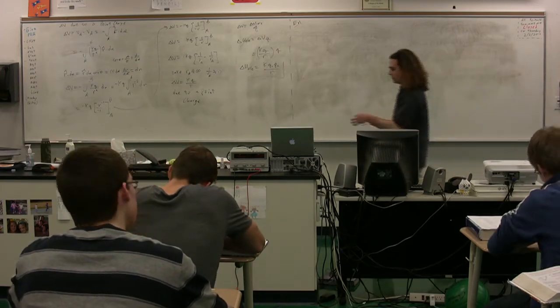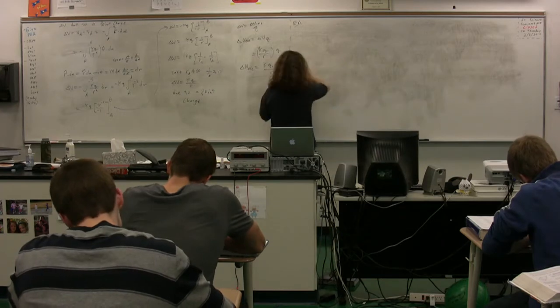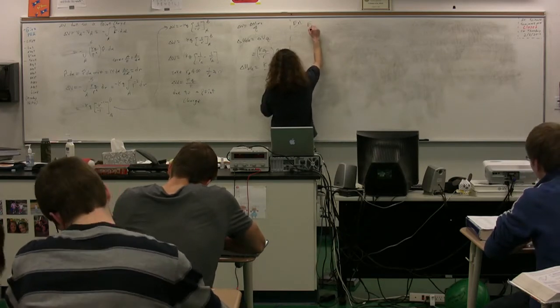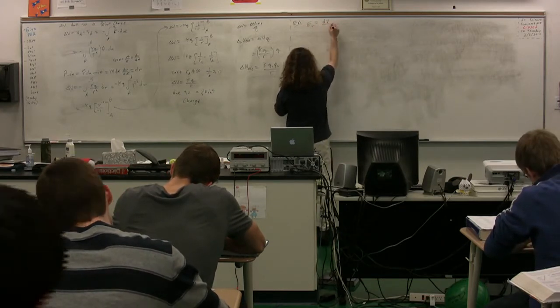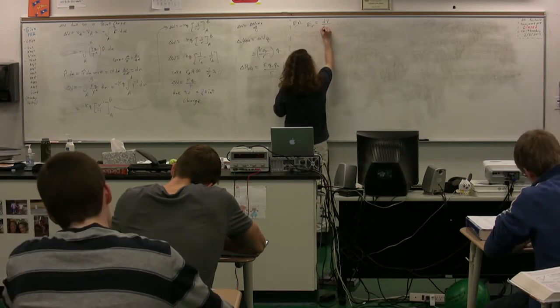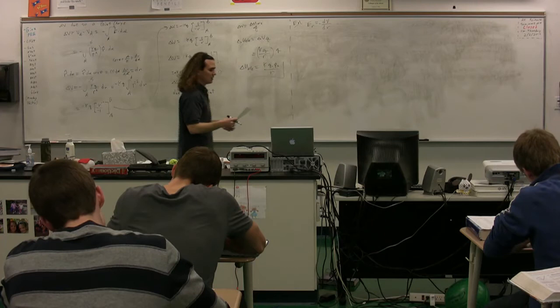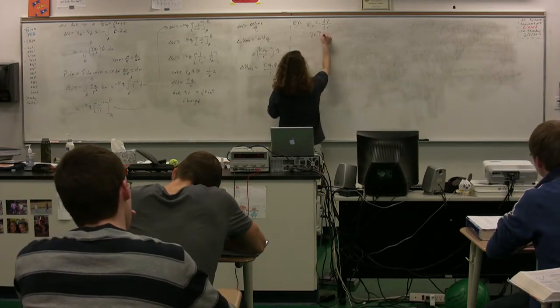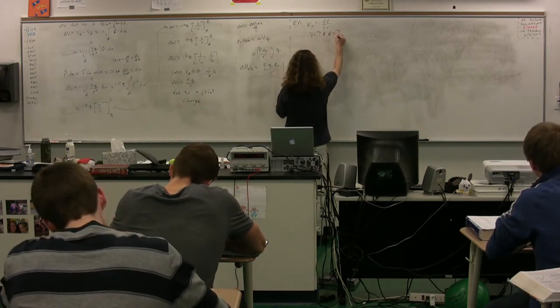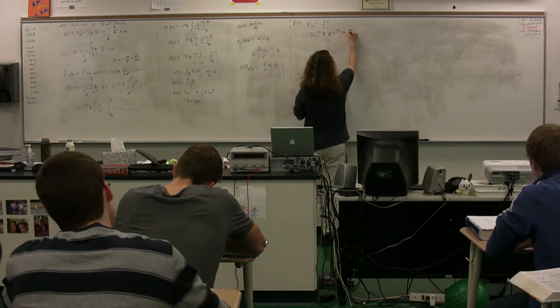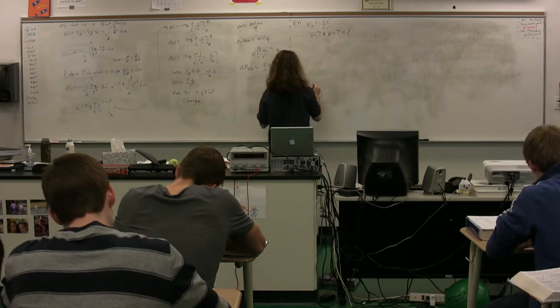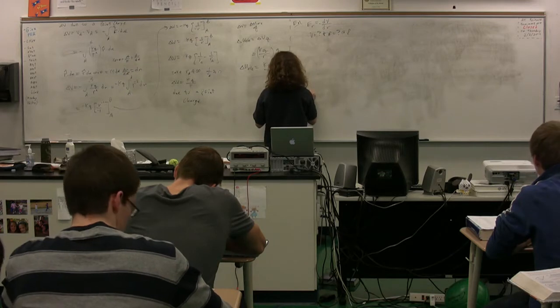What we're going to do is we are going to use the equation for the electric field, which is equal to the derivative of the electric potential as a function of position, the negative of that, to find both the electric potential and the electric field at a specific point from two positively charged particles.